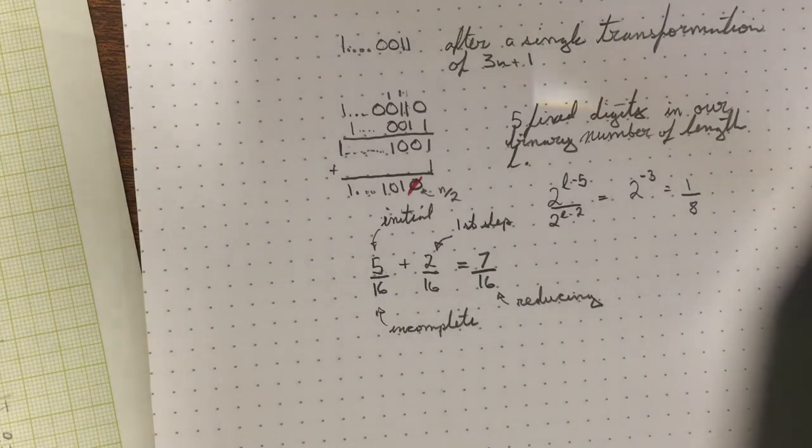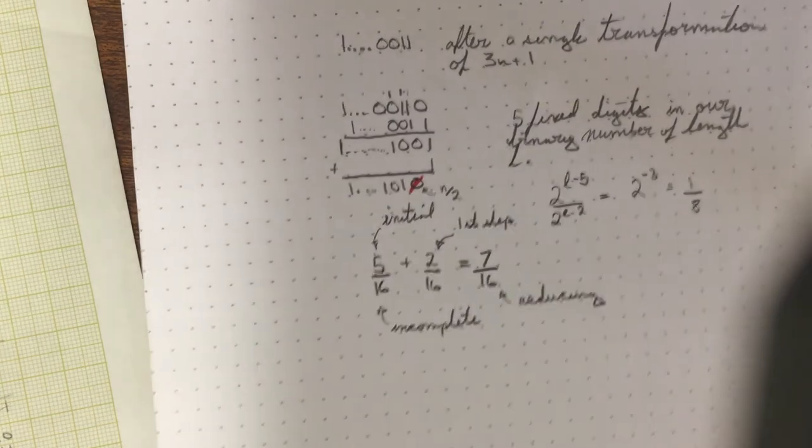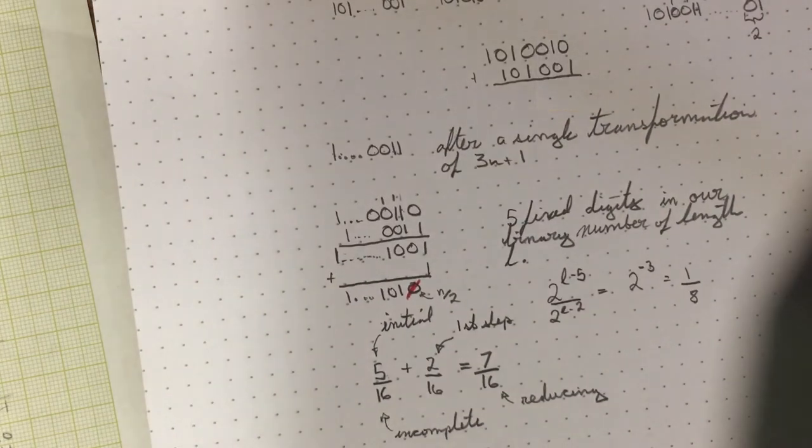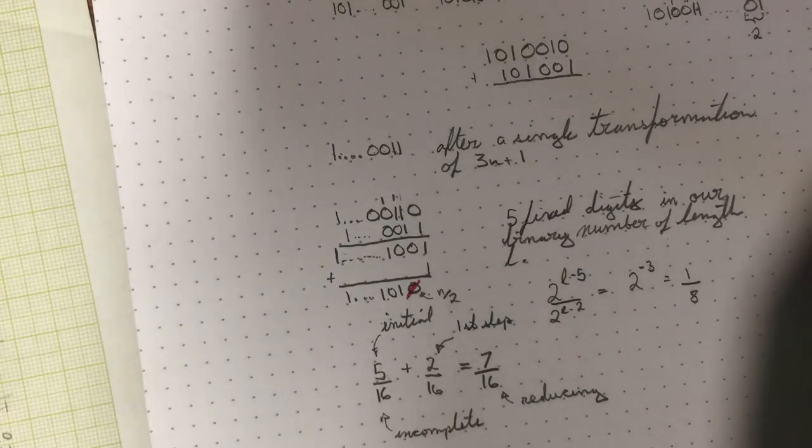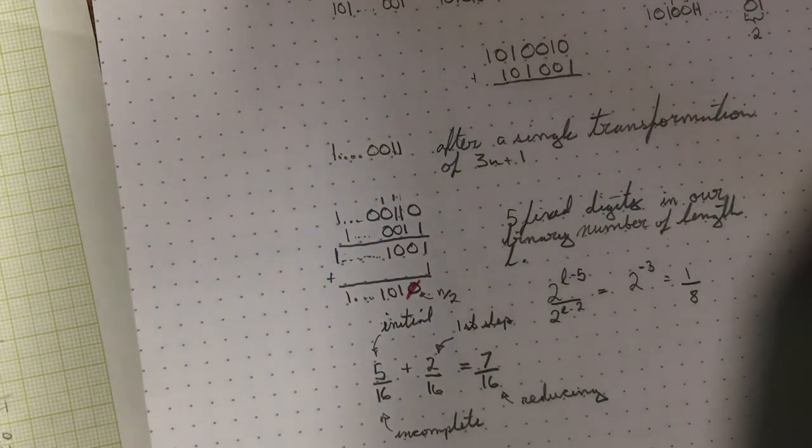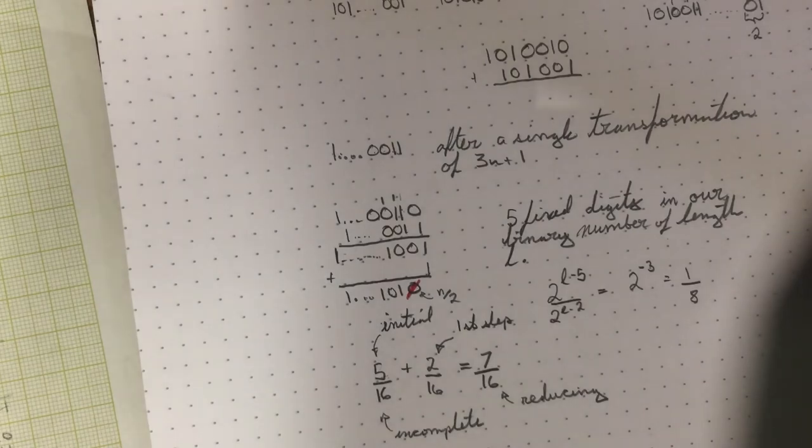I think it's pretty neat that you can just prove that like seven sixteenths of all odd numbers out to infinity of any length L will reduce under the Collatz conjecture with some pretty simple tricks. Obviously, the next set would be to ask: what happens after two steps and three steps? I don't want to keep going down that road because it becomes a bit Sisyphean.